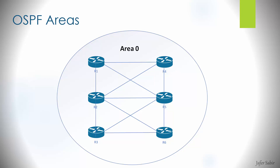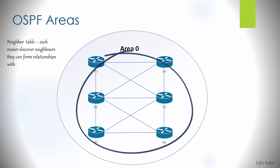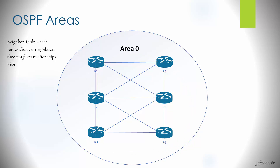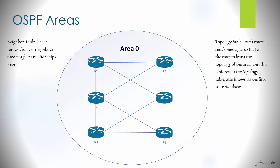All routers participating in OSPF go through three main steps and build three tables. In the first step, OSPF routers discover neighbors they can form relationships with and store this information in the neighbor table. In the second step, they build the topology table, which is like a map of the whole area, so routers know about all the different pathways to every single network.